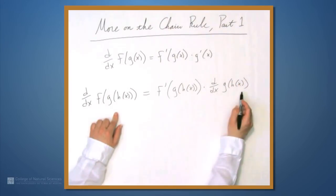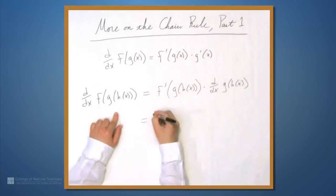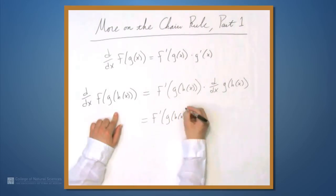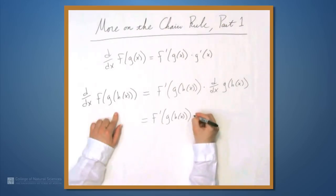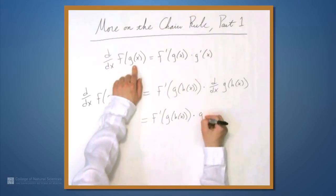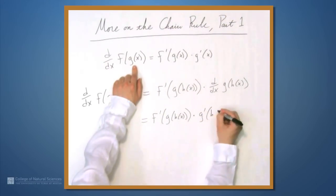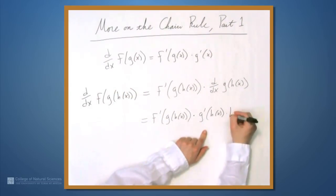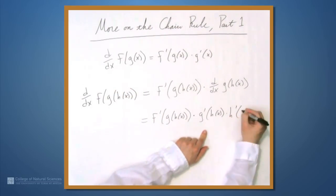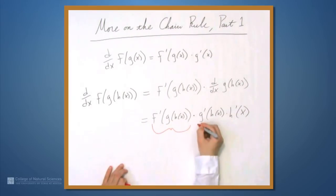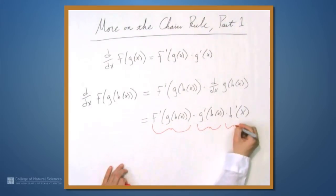Now we use the chain rule again to find this derivative. The first part is still f' of g of h of x, and now we apply the chain rule to get times g' of h of x, times the derivative of what's inside there, which is h' of x. So we end up with these three parts.